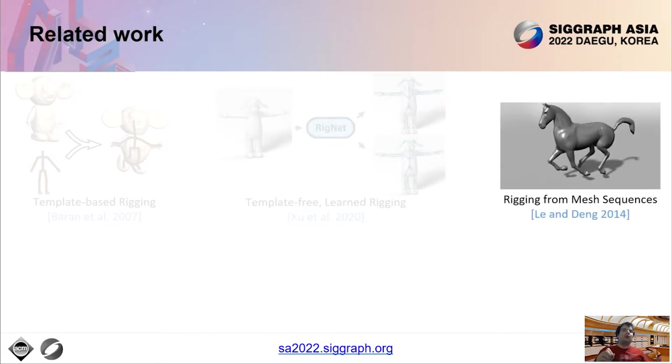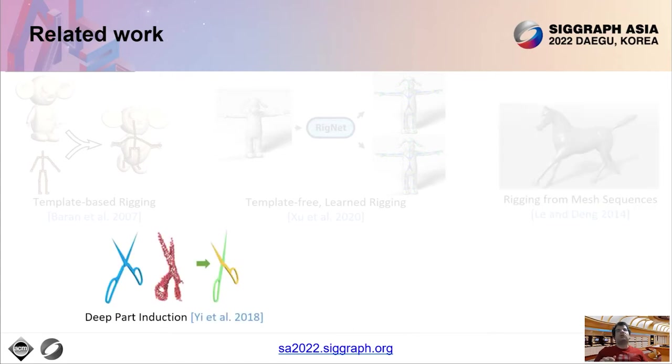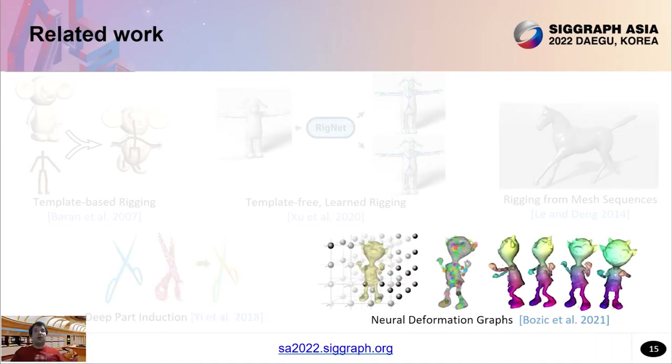A different approach to rigging is to discover rigid parts from mesh sequences. However, these methods assume mesh inputs without noise or missing data and cannot perform motion transfer. More related to our work are methods that attempt to discover articulating parts from point cloud data. Earlier efforts focus on segmenting target models based on point clouds representing different articulation states of objects. Another line of work extracts deformation graphs for neural reconstruction. However, none of these approaches are able to extract controllable rigs and cannot handle motion transfer to different characters.